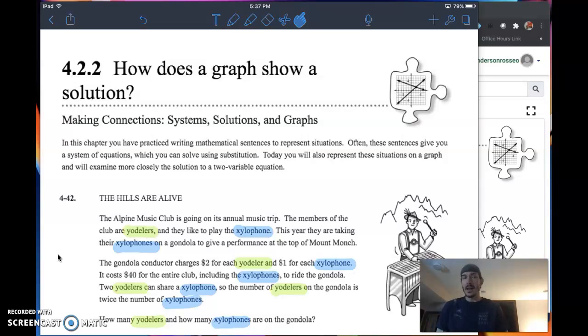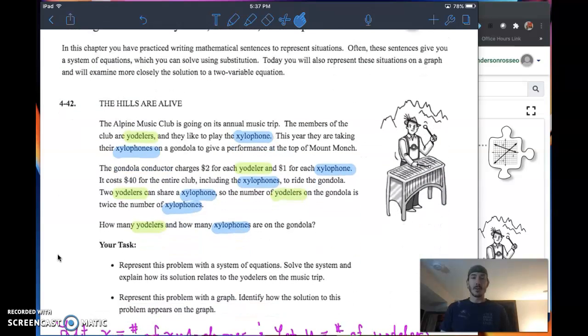And from those equations, we'll do some solving and some graphing. One of the most important things we can't overlook when dealing with a situation problem is reading for understanding. Problem 4-42: The Alpine Music Club is going on its annual music trip. The members of the club are yodelers and they like to play xylophones. This year, they're taking their xylophones on the gondola to give a performance at the top of Mount Monk. The gondola conductor charges $2 for each yodeler and $1 for each xylophone. It costs $40 for the entire club, including the xylophones, to ride the gondolas. Two yodelers can share a xylophone, so the number of yodelers on the gondola is twice the number of xylophones. The question is: How many yodelers and how many xylophones are there on the gondola?